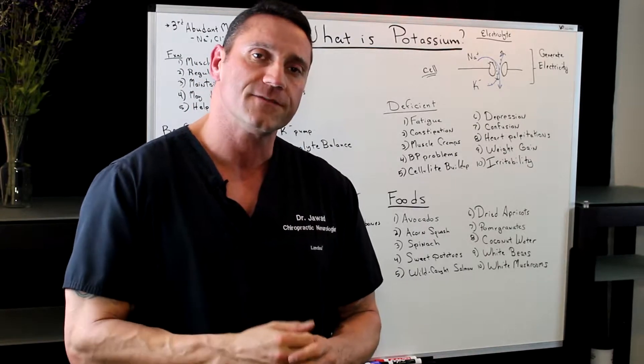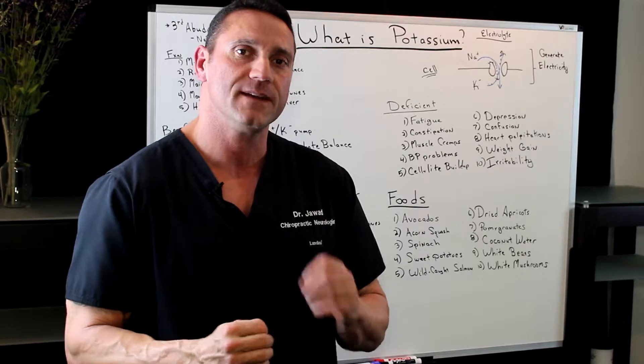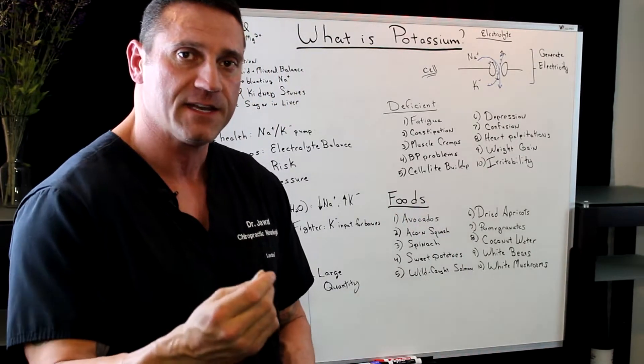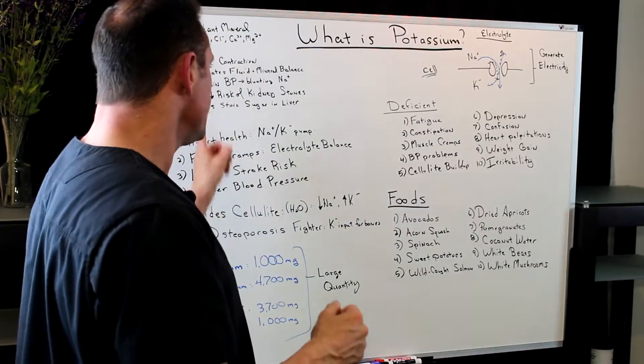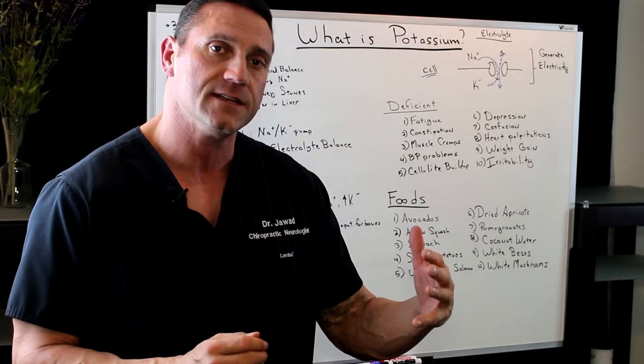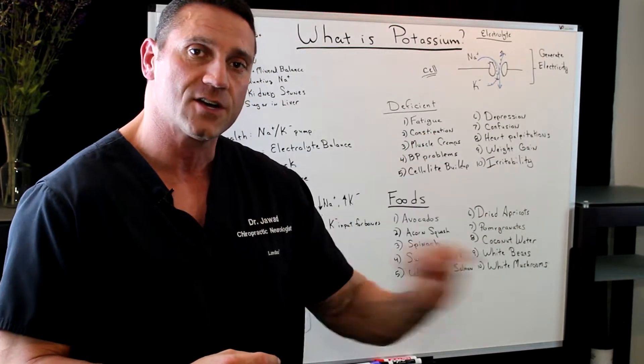The one thing you have to watch out for with dried apricots is that it's high in sugar. So you want to monitor the dried apricot intake because yes, it's going to help store sugar in the liver. However, if you have too much sugar in the system, it's going to spike the insulin. Increased spikes of insulin is going to cause inflammation.